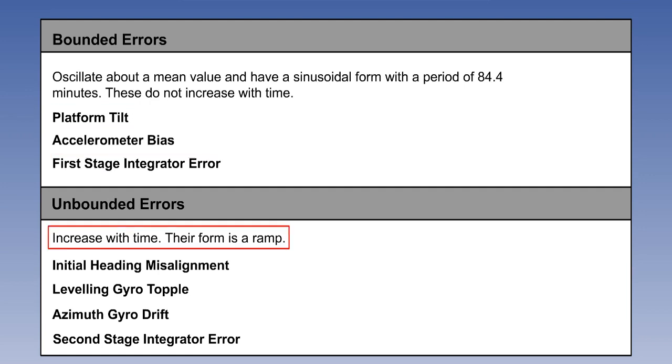Unbounded errors increase with time. Their form is a ramp. They consist of initial heading misalignment, leveling gyro topple, azimuth gyro drift, and second stage integrator error.